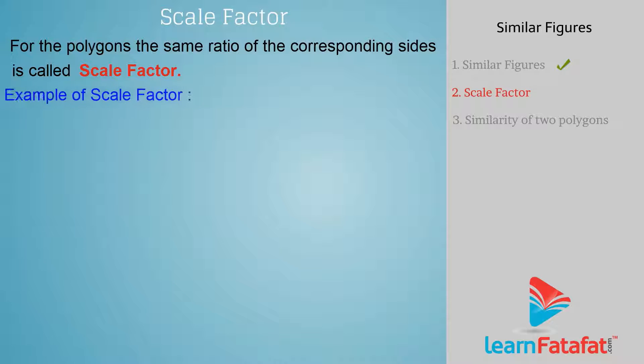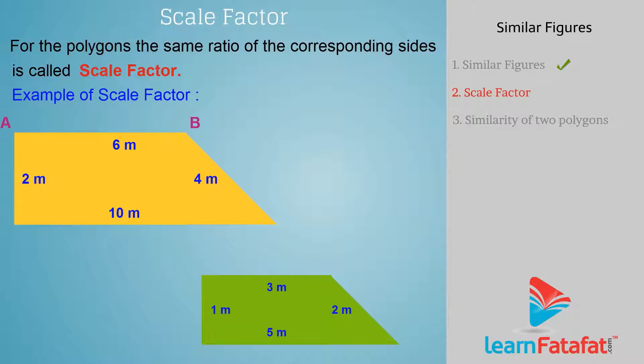Example of scale factor. In quadrilaterals ABCD and PQRS, the ratio of AB divided by PQ, BC divided by QR, CD divided by RS, DA divided by SP is the same. That is 1 divided by 2.